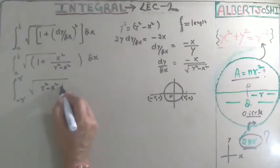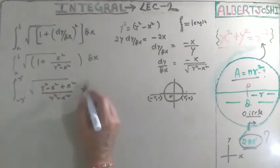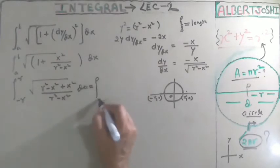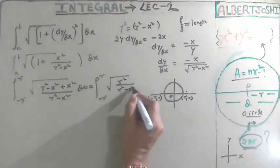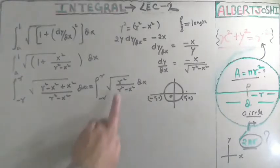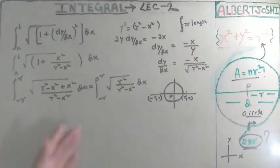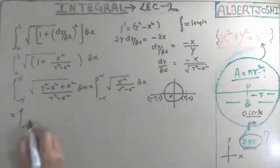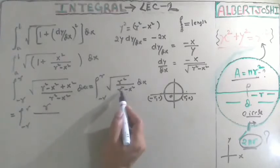After simplification, the terms r²−x² + x² in the numerator and denominator reduce, giving us the integral from −r to r of √(r² / (r²−x²)) dx. Since r is a constant, it comes outside the integral, giving r times the integral from −r to r of 1/√(r²−x²) dx.